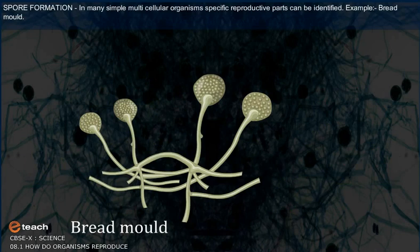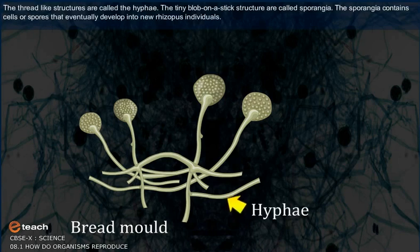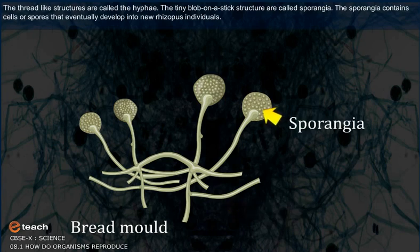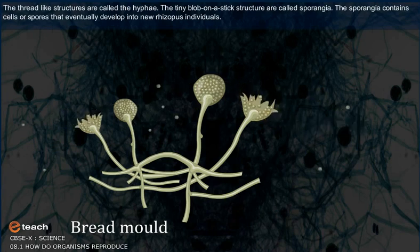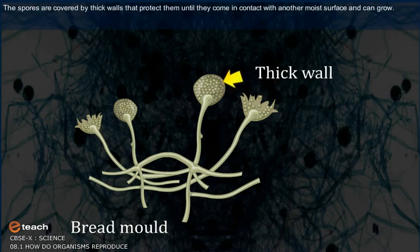In spore formation, specific reproductive parts can be identified in many simple multicellular organisms. For example, in bread mold, the thread-like structures are called hyphae, and the tiny blob-on-a-stick structures are called sporangia. These sporangia contain spores that eventually develop into new Rhizopus individuals. The spores are covered by thick walls that protect them until they come into contact with a moist surface and can grow.